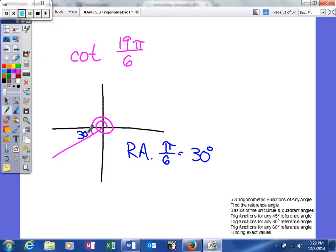So this is going to be our reference angle. So we know which quadrant we're in. We know what our reference angle is. Now we're going to draw and label our triangle. It's always between the terminal side and the x-axis.